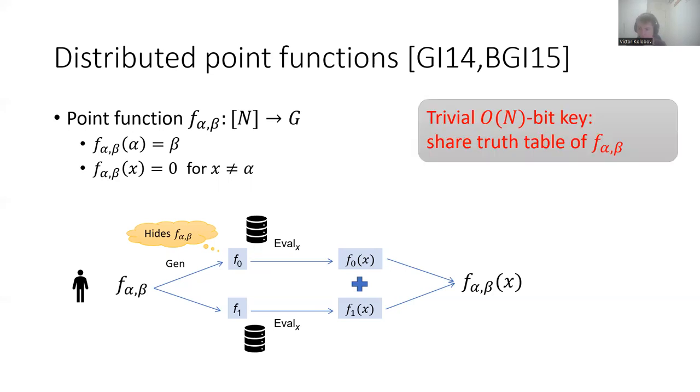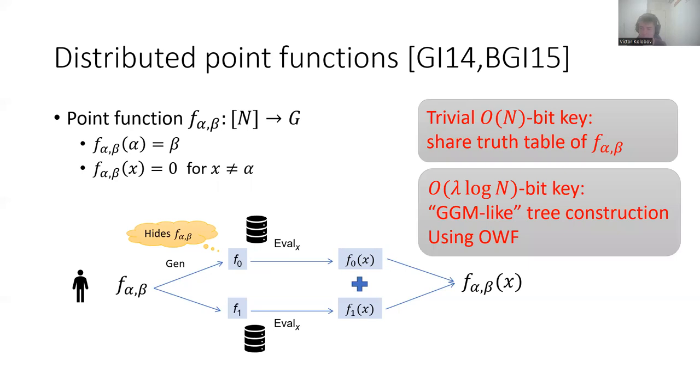Now, this primitive can be trivially achieved with linear key size by just secret sharing the truth table of the point function. And assuming one-way functions, this can be dramatically improved using a DGM-like tree construction yielding a scheme with logarithmic key length. And actually, this construction is also tight in the sense that two-server DPF implies one-way functions.